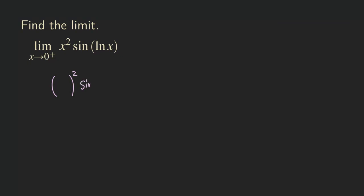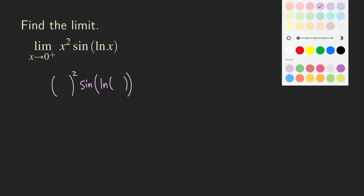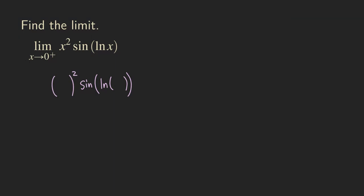What we're going to do is write down the form of the limit problem: some quantity squared, times sine of ln of something. We are going to put in zero — zero plus — in both places.